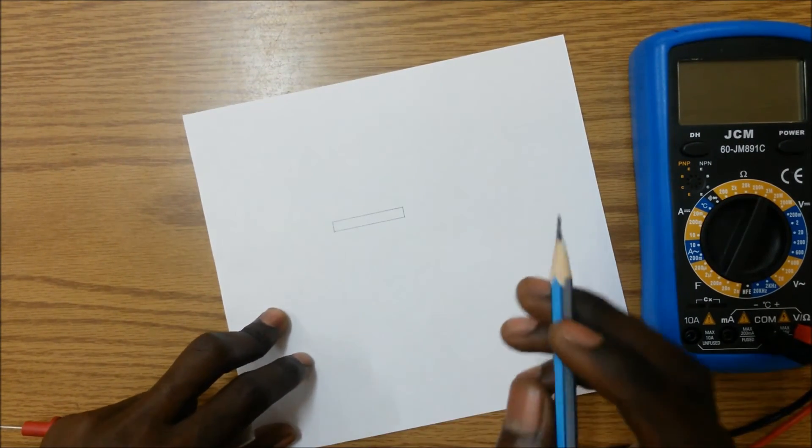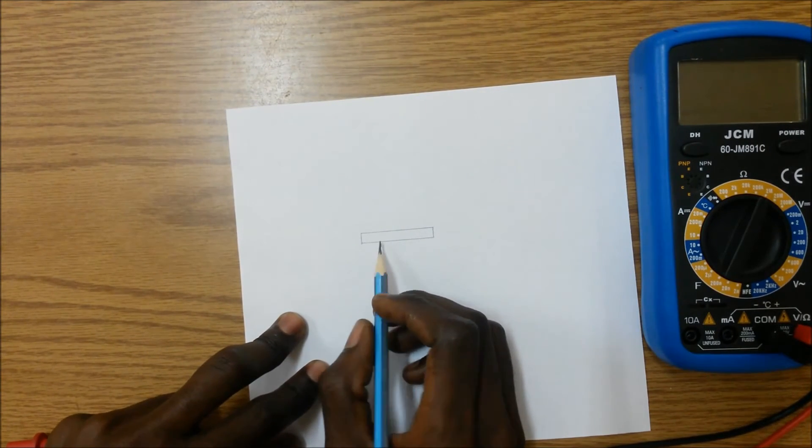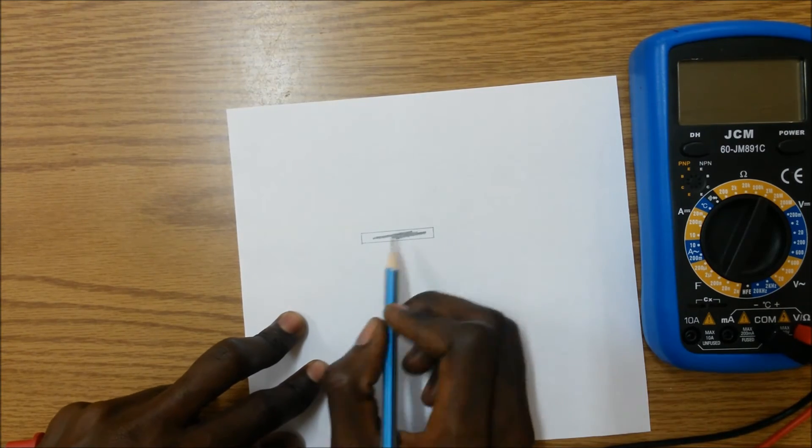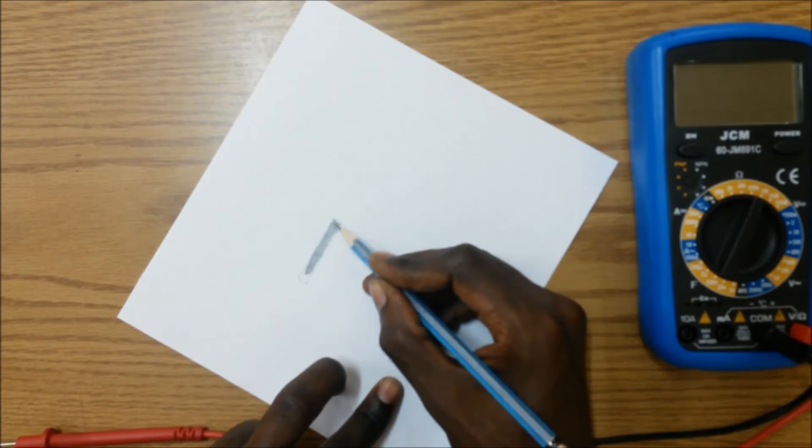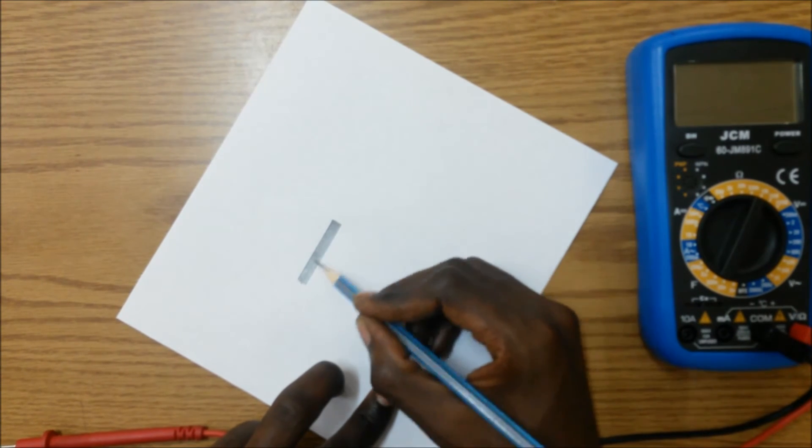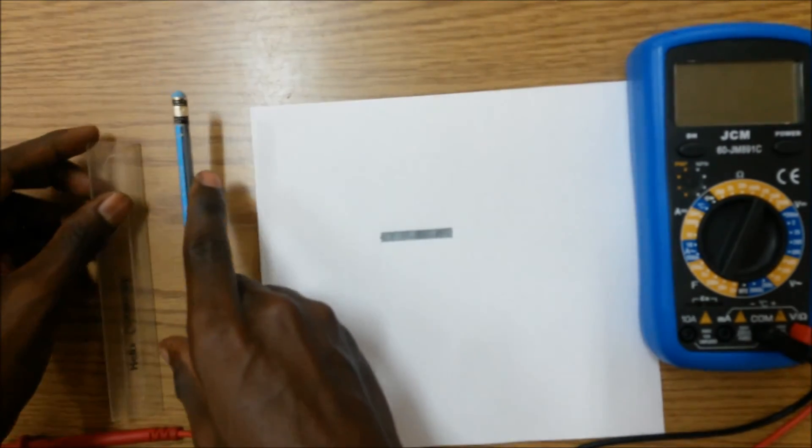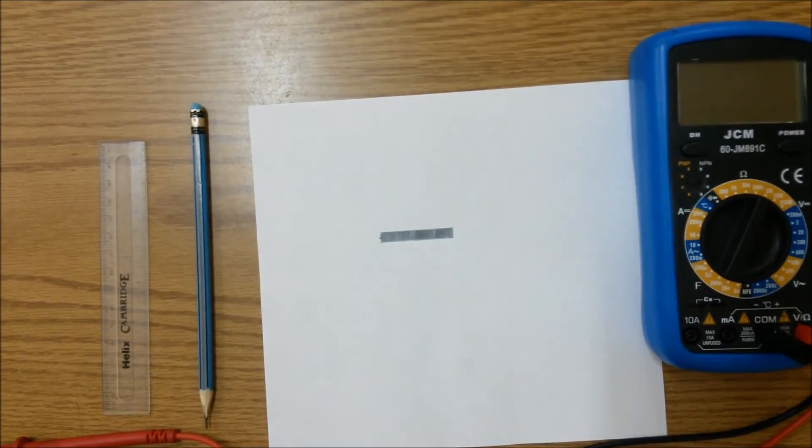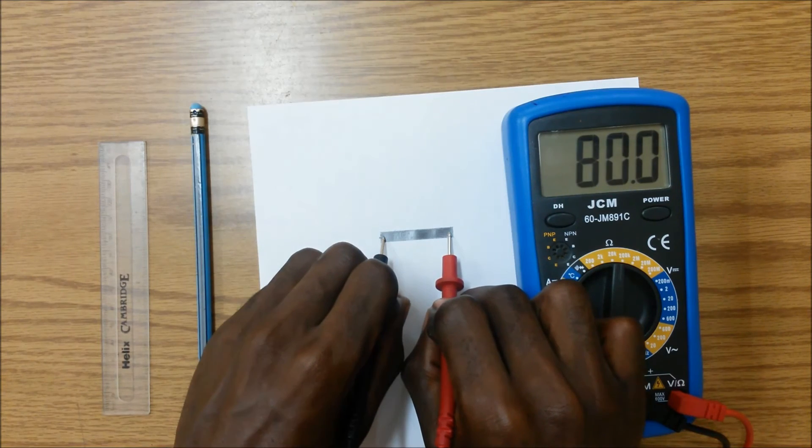So once we've completely blackened our rectangle we're going to take our multimeter and place it at the opposite end of that blackened box.